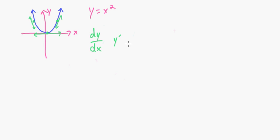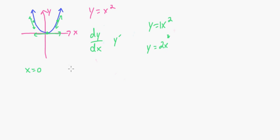How do you take the derivative? It's pretty easy. If we had y equals x squared, all you have to do is multiply the exponent by the coefficient. The coefficient here is 1, so 2 times 1 is 2, and then just reduce the exponent by 1, so the derivative is 2x. This is basically the equation for the gradient. So if x equals 0, we plug that in: 2 times 0 is 0. So the gradient there is 0.